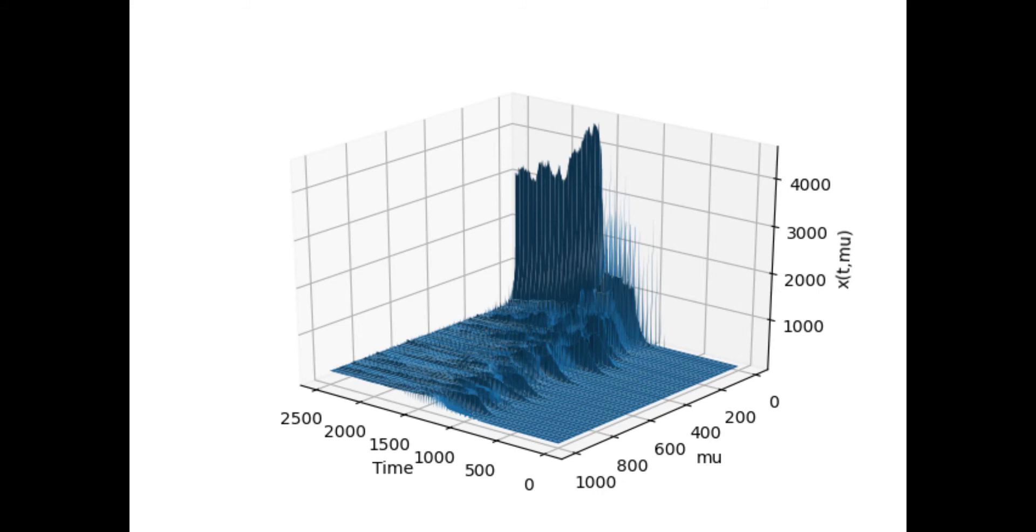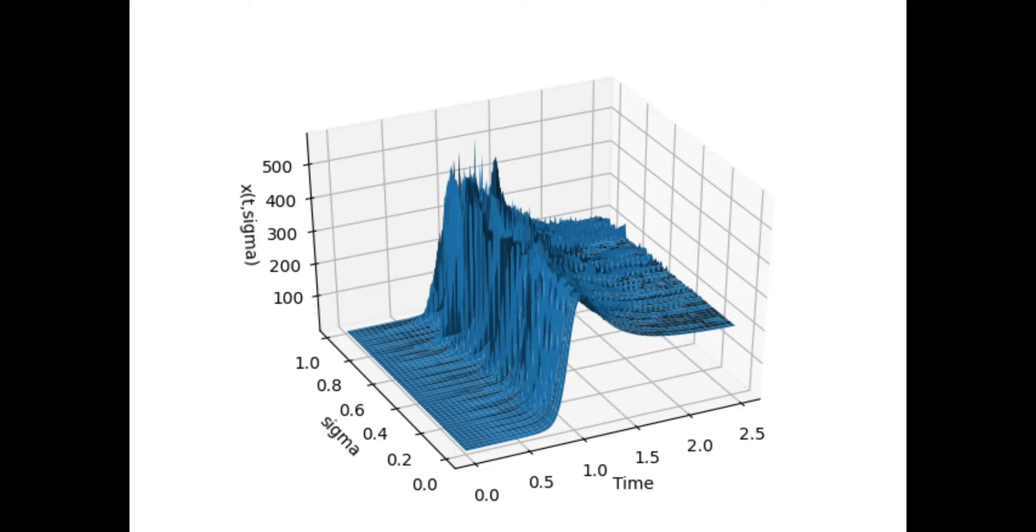This is what happens if you vary one of the other parameters in the model. You can see this increases the overall peak of the virus quite substantially. As you actually decrease this parameter mu, the peak increases quite a bit. This is the effect of increasing noise in that model. Increasing noise has still some effect, not quite as much as the first model.